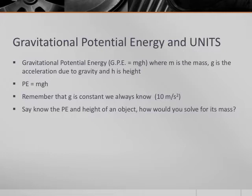Gravitational potential energy, GPE, or most commonly you'll see it referred to as PE, is equal to mass times gravity times height. M stands for mass, G is the acceleration due to gravity, and then H is your height.